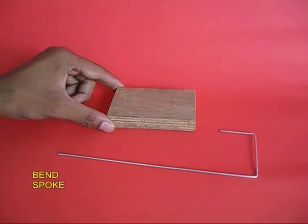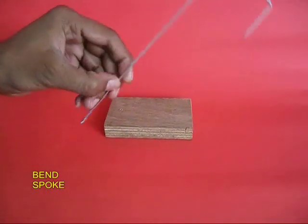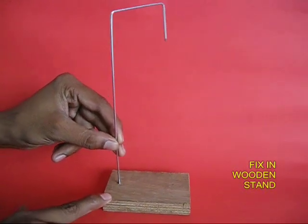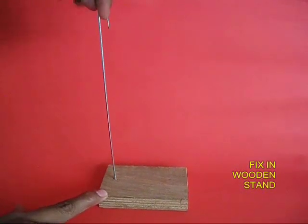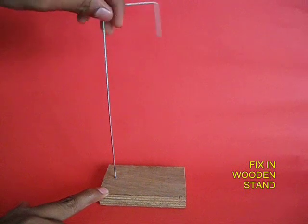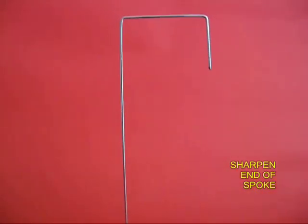First take the bicycle spoke and bend it twice at right angles, then screw it into a hole in the base of the wood. Now this is your stand.